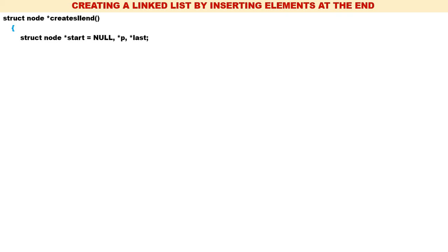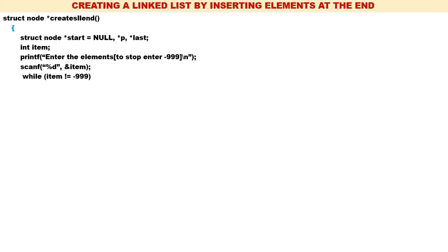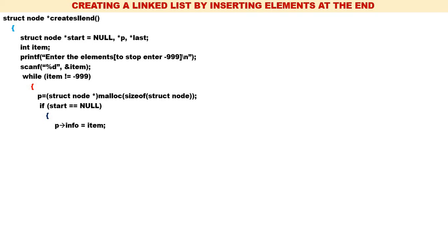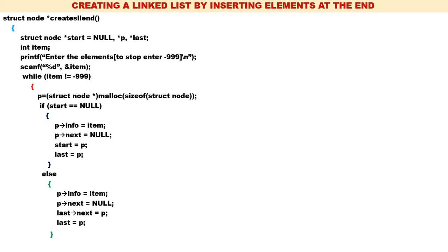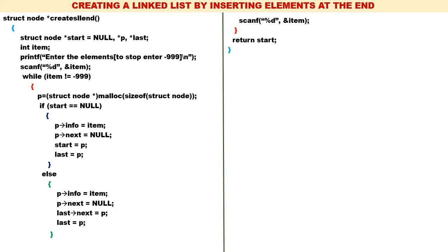Now let us look at the function create_sll, which creates a single linked list by continuously inserting elements at the end. Start is equal to null. Enter the elements — to stop, enter minus 999. Read item. While item is not equal to minus 999: create a new node; if start is equal to null, execute the then logic; otherwise execute the else logic. Read one more item and go back to the while loop. When you come out of the while loop, return start. That is the complete logic for the function.